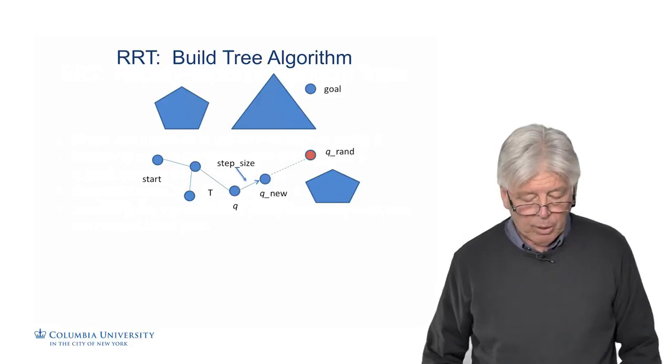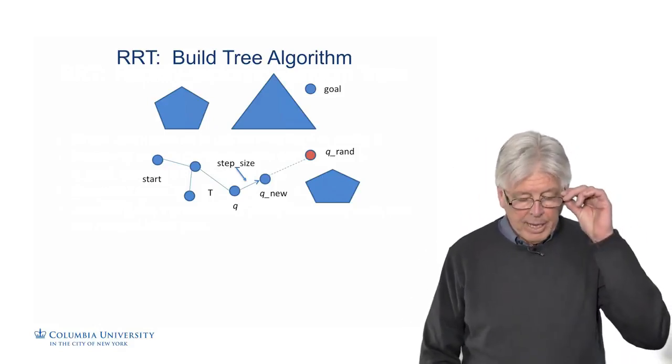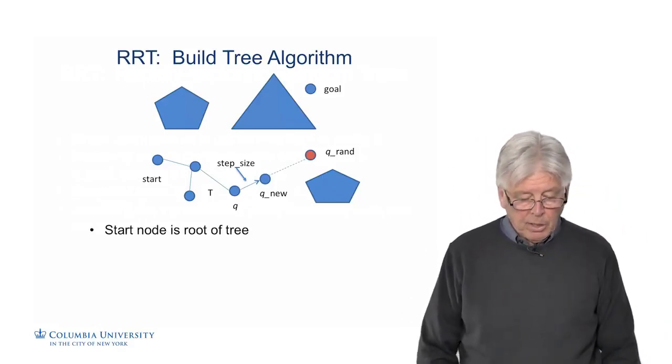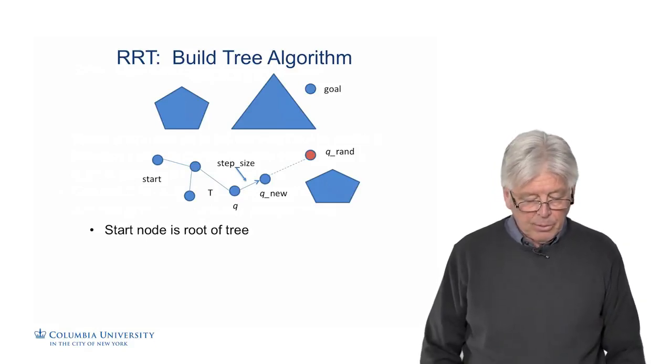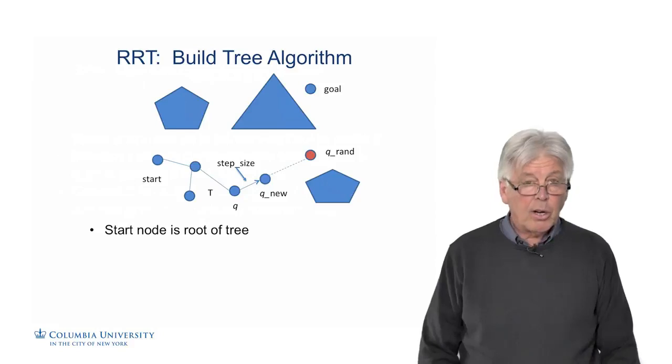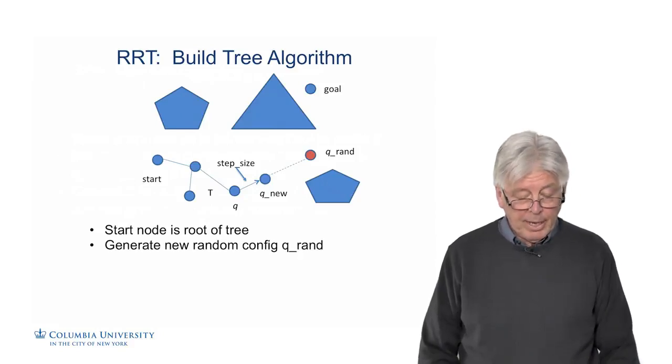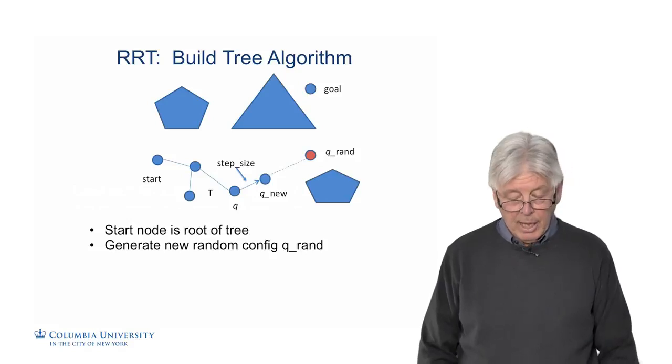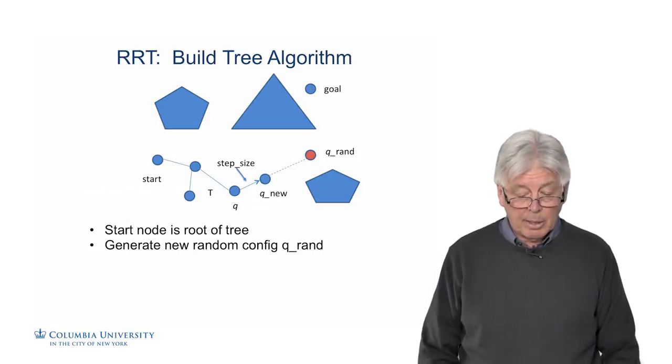So how does this work? Here is the build tree algorithm. Let's take this group of obstacles, and we're trying to navigate from a start to a goal. You can see the start is the root of the tree. At each step, we're going to generate a new random configuration, Q-RAN. We've built a few nodes of the tree already. Now we generate a random configuration, Q-RAN, which is the red dot in the image.